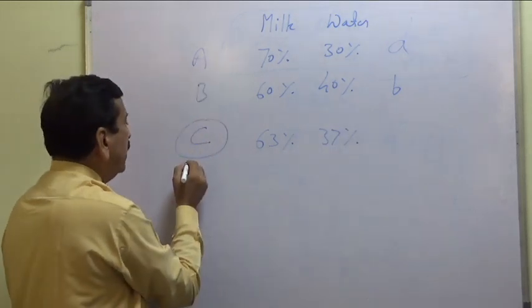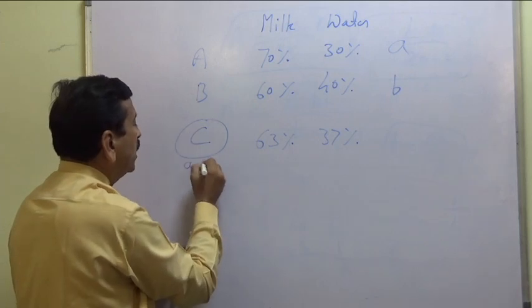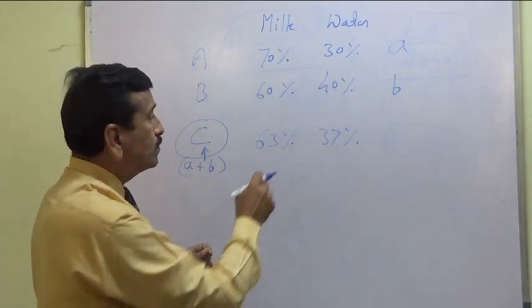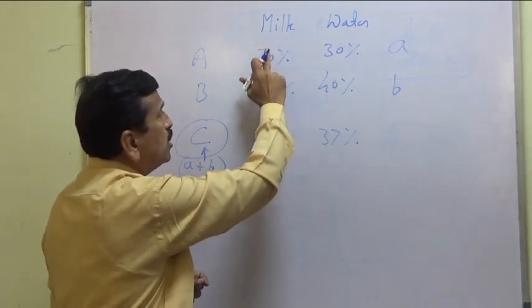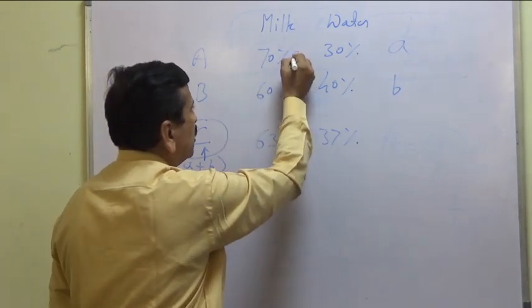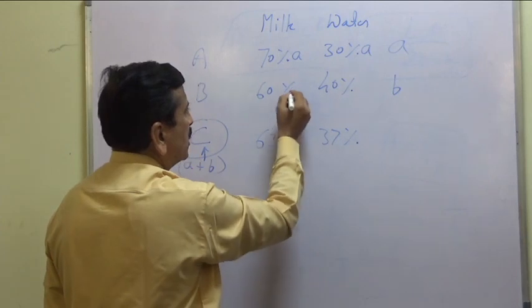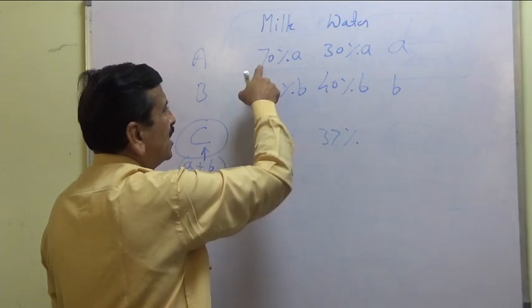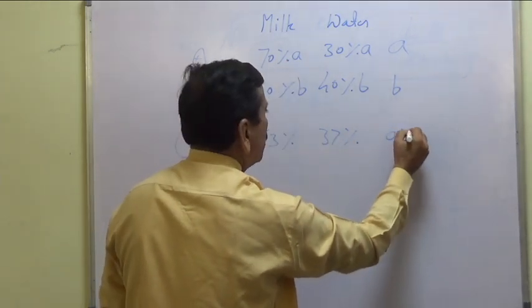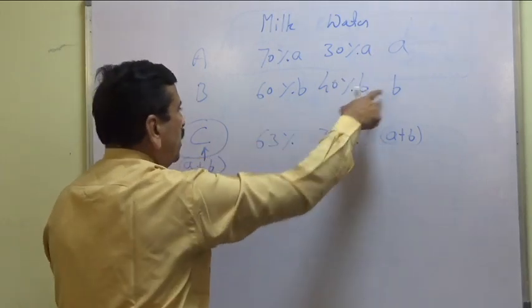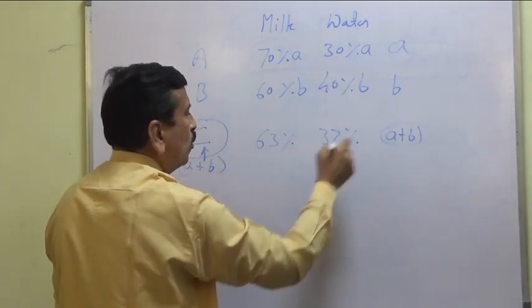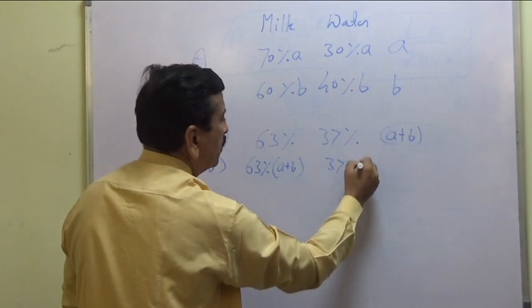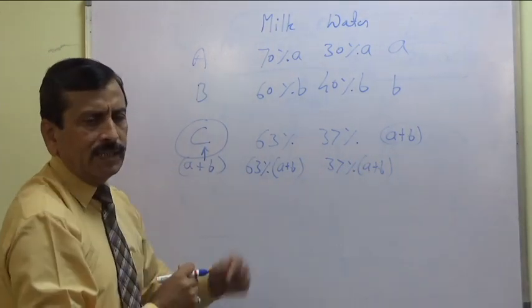Let him take A liters from can A and B liters from can B, giving a total mixture of A plus B liters. From can A: 70% of A is milk, 30% of A is water. From can B: 60% of B is milk, 40% of B is water. The resulting mixture should have 63% milk and 37% water of the total A plus B.